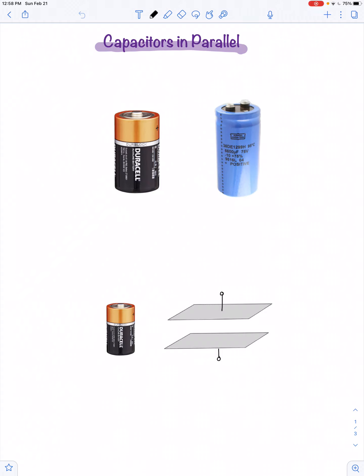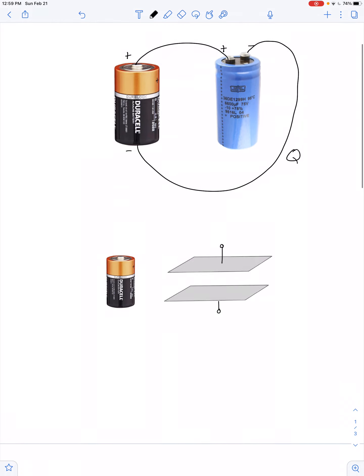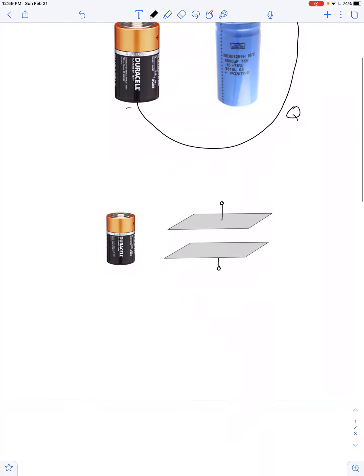When a battery is connected to a capacitor, we say the capacitor stores energy. Some people will say the capacitor stores charge, and I don't have too big of a problem with that. What is meant by Q, the amount of charge stored in the capacitor, is the amount of positive charge on the positive plate — it's the magnitude of the charge on either of the two plates.